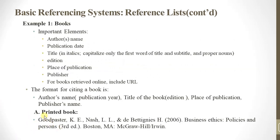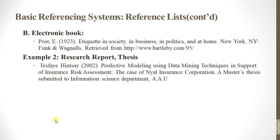This is the format for a printed book citation, along with an example. For electronic books, the format is similar — for example: Post, A. (1923). New York: Williams — followed by the electronic access information.